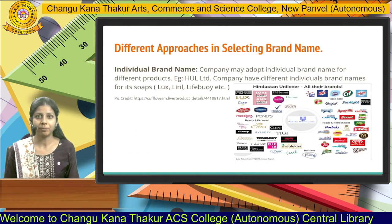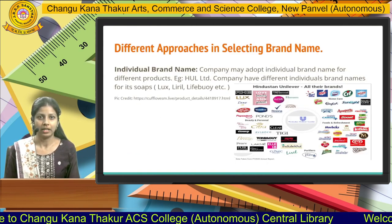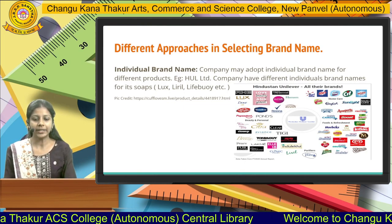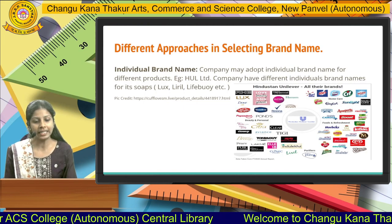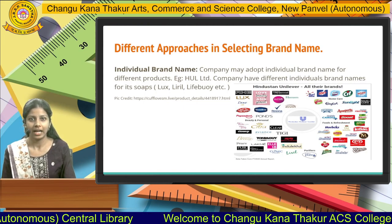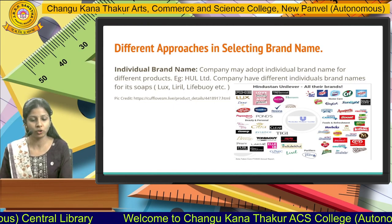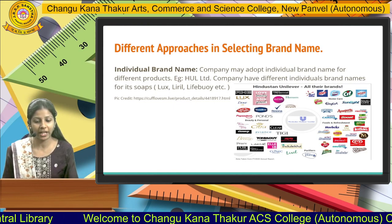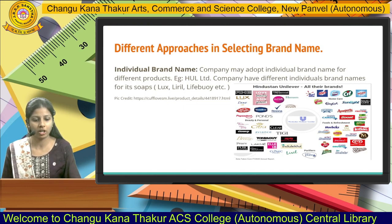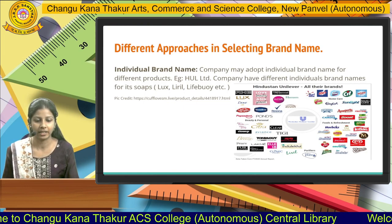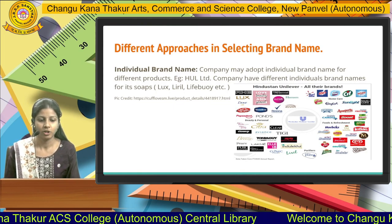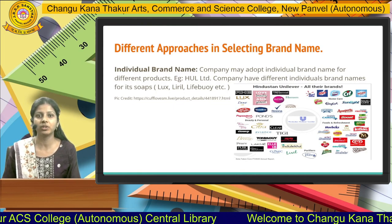Different approaches in selecting a brand name. First is individual brand name — here a company adopts individual brand names for different products. For example, Hindustan Unilever Limited has launched various categories of soap: Lux, Dove, Lifebuoy. All these soaps are launched by Hindustan Unilever Limited but specify individual characteristics of the brand, which is why it comes under individual brand name.